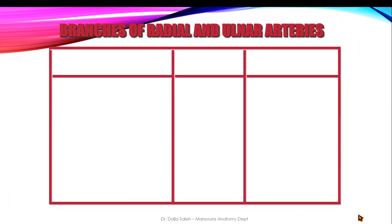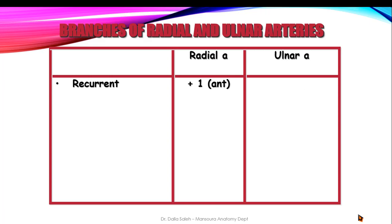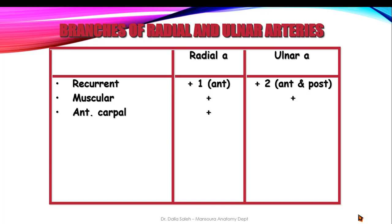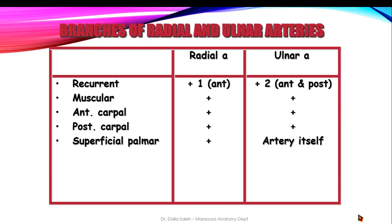Both the radial and ulnar arteries give recurrent branches sharing in the anastomosis around the elbow — the radial artery gives one branch while the ulnar artery gives two: anterior and posterior ulnar recurrent branches. Both give muscular branches to the forearm muscles, and both give anterior and posterior carpal branches to the wrist joint. For the superficial palmar arch, the radial artery gives a superficial branch while the ulnar artery itself forms it. For the deep palmar arch, the radial artery itself forms it while the ulnar artery contributes a deep palmar branch.